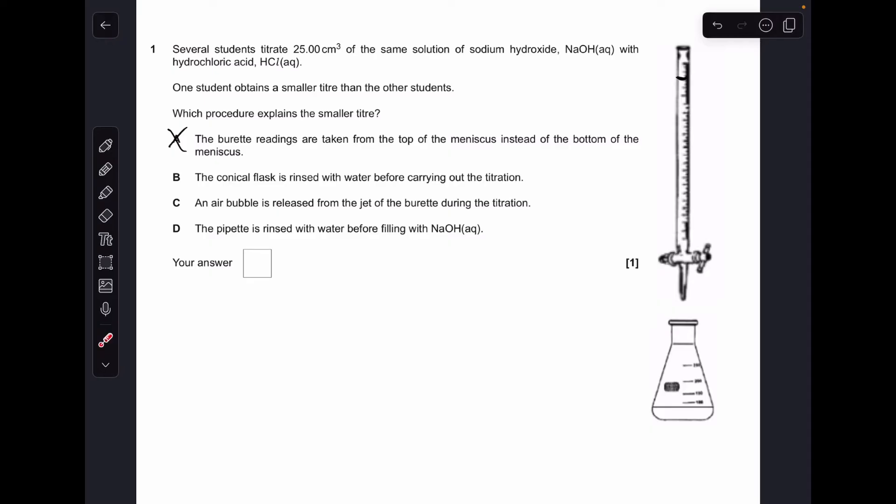Moving on to B, so if this conical flask was rinsed with water before doing the titration, if you're putting the same volume and concentration of sodium hydroxide in here, you put in exactly the same number of moles of sodium hydroxide in there, and so therefore the titre will be exactly the same. So B is not right.